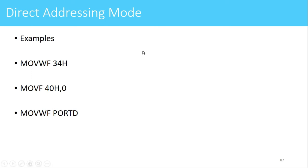These are some examples of direct addressing mode. The first is MOVWF 34h — 34 hex is the address location and this is the direct address of RAM memory. The next instruction is MOVF 40h, 0. The meaning of this instruction is that the data available at 40 hex location will be copied to the working register. Here again, 40 hex is the direct address of the RAM location. The last instruction is MOVWF PORTD. Here, PORTD has an address which is part of RAM memory, so it is treated as a direct address and this instruction is of direct addressing mode.